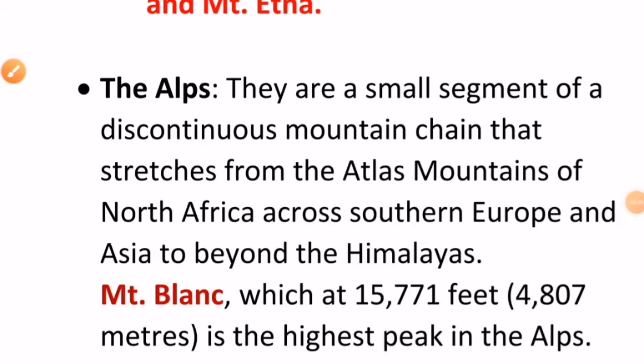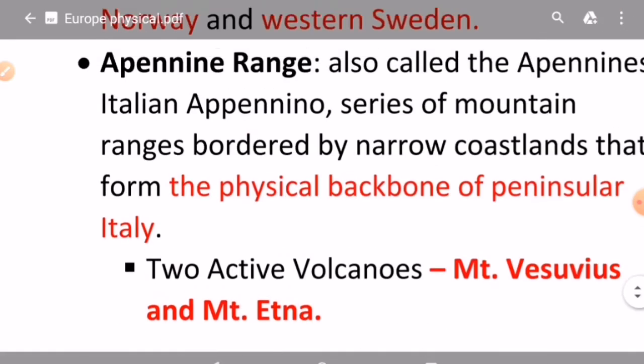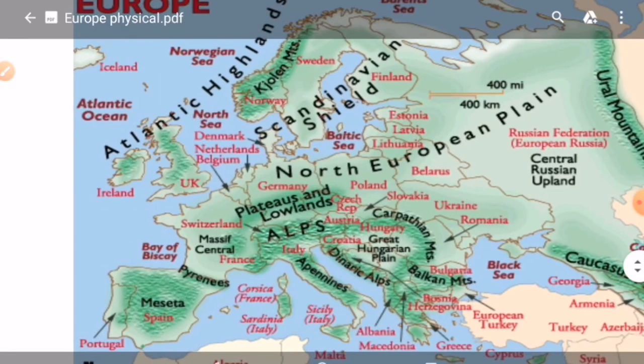The Alps are a segment of a continuous mountain chain that stretches from the Atlas Mountains of North Africa across southern Europe and Asia to beyond the Himalayas. Mount Blanc is the highest peak of the Alps — this is very important. You can see the Alps in the map here.